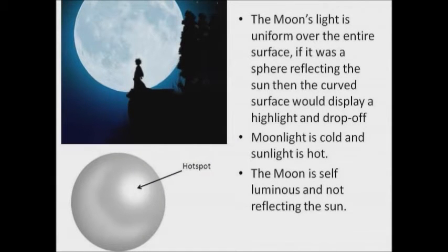We are told that the moon is also spherical, but when we look at the moon it seems to be lit uniformly over its entire surface. But if it was a sphere reflecting the sun, then that curved surface would display a highlight and then that light would drop off as it went round the surface. But that's not what we see. The entire moon is lit uniformly.